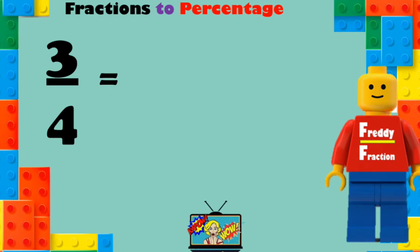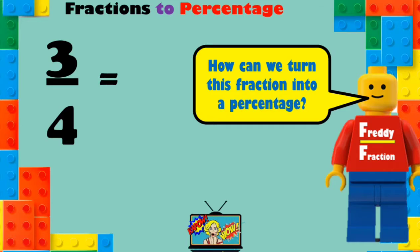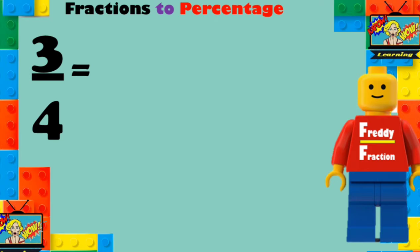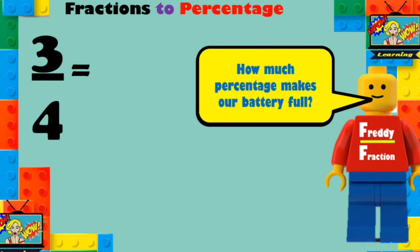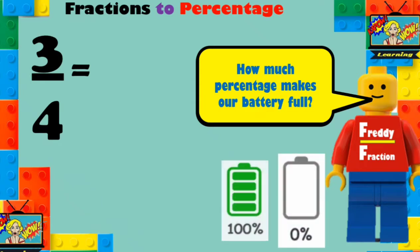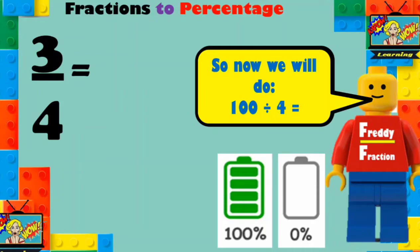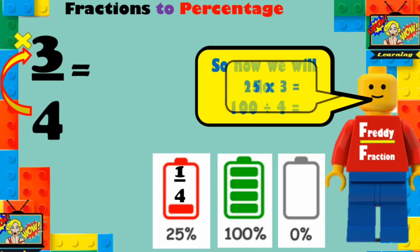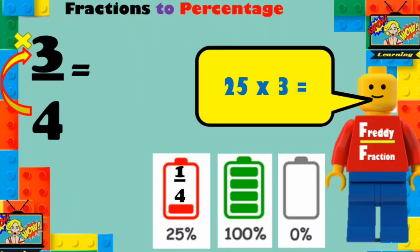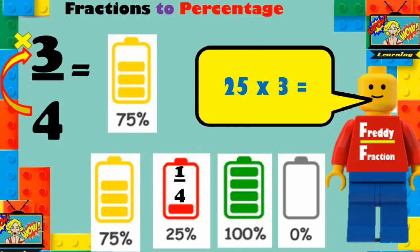Now, here we have three quarters. This is a fraction. But how can we turn this fraction into a percentage? We need to turn three quarters into a percentage. How much percentage makes our battery full? 100 percent! So what we're going to do is 100 divided by the 4. That equals 25 percent! But we have a 3 in the numerator — because 1 quarter equals 25 percent, but we're after 3 quarters! So we're going to multiply by 3. 25 multiplied by 3 is equal to 75 percent! 3 quarters is equal to 75 percent! That's totally awesome!